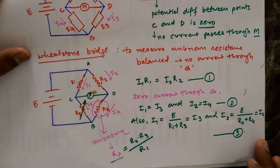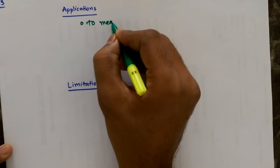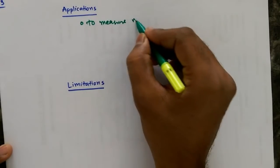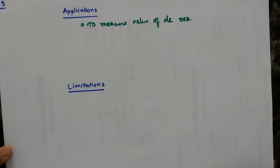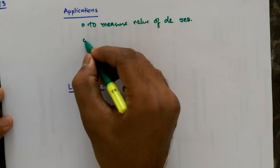So one application now will be to measure the value of DC resistance, as our source is DC. So it is used to measure the DC resistance.